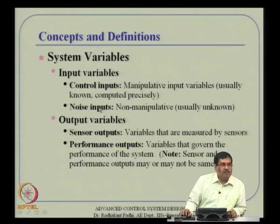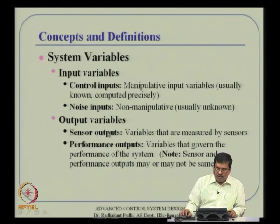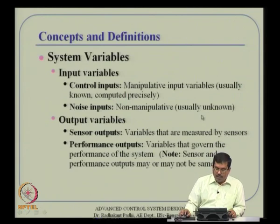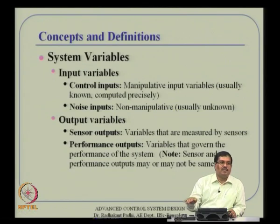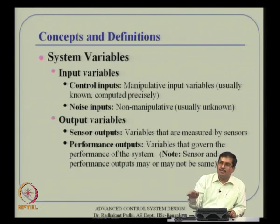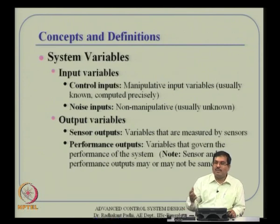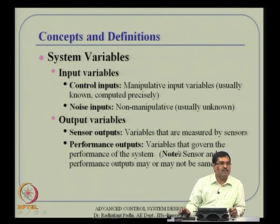The next set of variables are output variables, again of two types: sensor output and performance output. Sensor outputs are measured by sensors, while performance outputs are variables that govern the performance of the system. These need not be the same. For example, if you want to land an aircraft, height is a performance variable, but you may not have a direct height measurement — position can be measured by a different sensor.